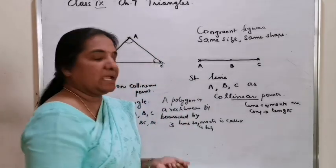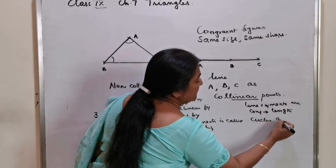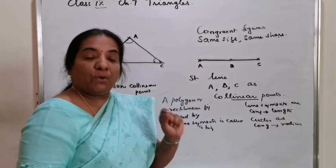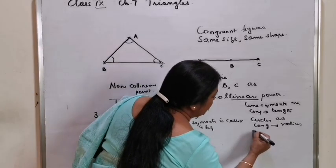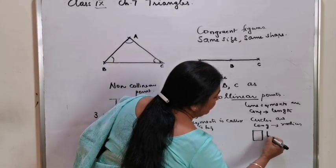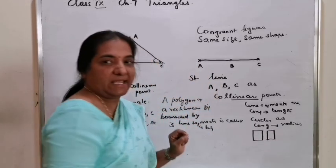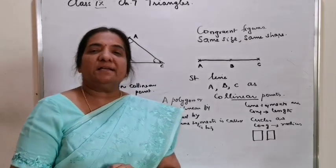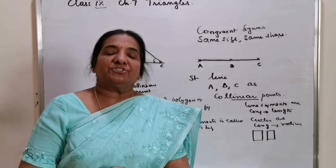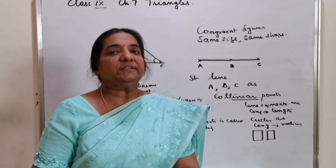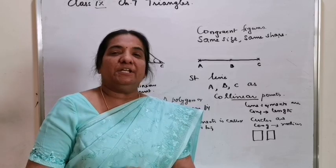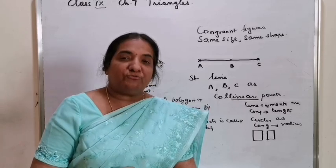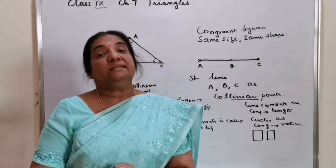When can you say two circles are congruent? If they have the same radius. When can you say two squares are congruent? If the sides of the squares are of the same length. Similarly, how can you say two triangles are congruent? For triangle congruence, we need not prove that all 6 elements are equal. We can prove triangle congruence by certain criteria.